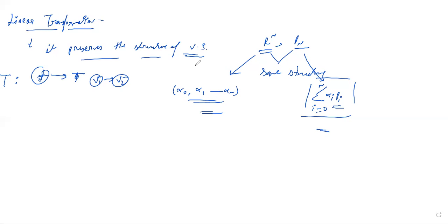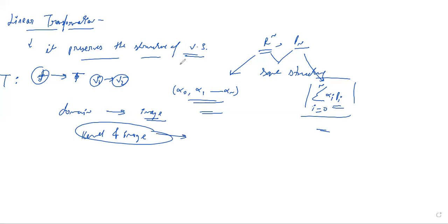There are many qualitative things in linear transformation, such as the domain. The domain of a linear transformation under certain conditions would be the image of the linear transformation. Similarly, the kernel and image are both subspaces — not merely subsets — of the range of the linear transformation. We will see these one by one.